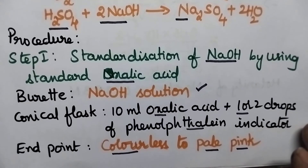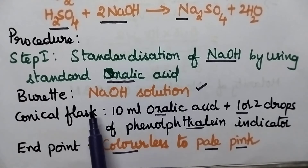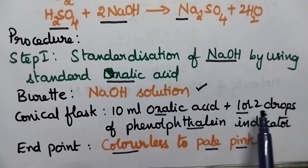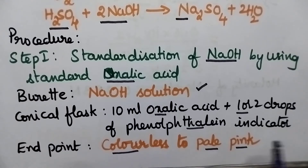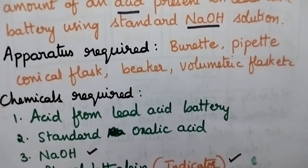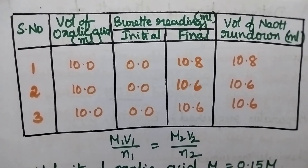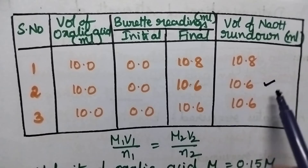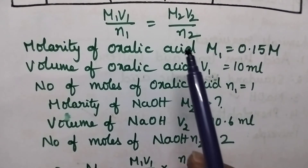Coming to the procedure, it involves two steps. The first step is standardization of NaOH solution using standard oxalic acid. Initially, the burette is filled with NaOH solution, and then 10 ml of oxalic acid is pipetted out into a conical flask. To that, 1 or 2 drops of phenolphthalein indicator is added, and the solution is titrated against NaOH solution until the colorless solution turns into pale pink. The titration is repeated until 2 concurrent readings are obtained. The values are tabulated as volume of oxalic acid, burette readings, and volume of NaOH run down. Once 2 concurrent readings are obtained, stop the titration. The formula used is M₁V₁/N₁ = M₂V₂/N₂.